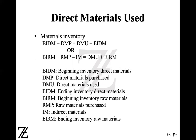First we are going to use the algebraic equation to calculate the direct material used. If all the material you have is direct material, you're going to use the first equation: beginning inventory direct material plus direct material purchases equals direct material used plus ending inventory direct material. Solving for DMU: DMU equals beginning inventory direct material plus direct material purchases minus ending inventory direct material.